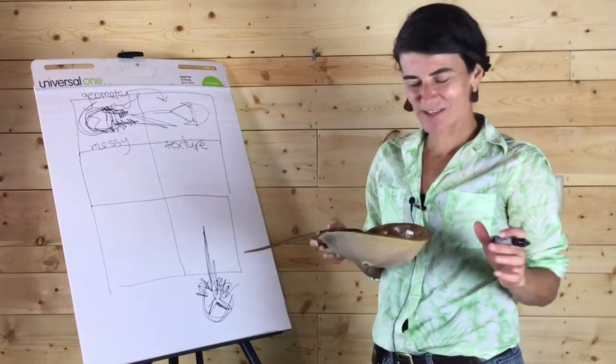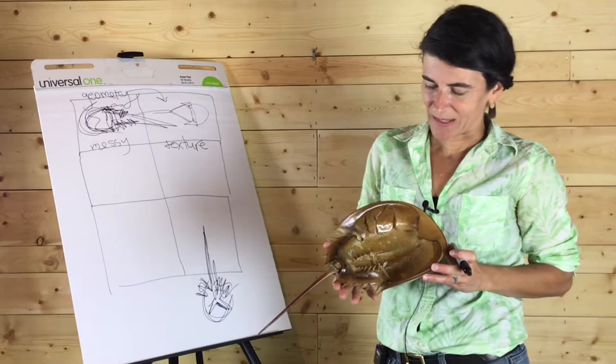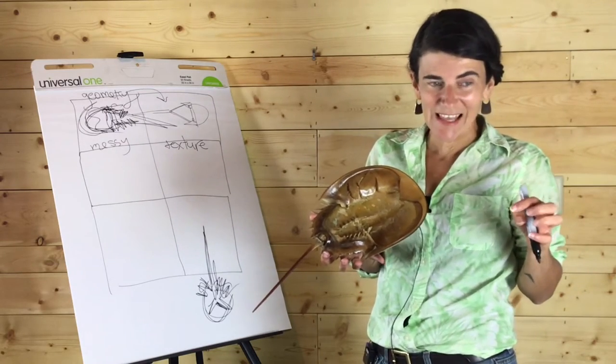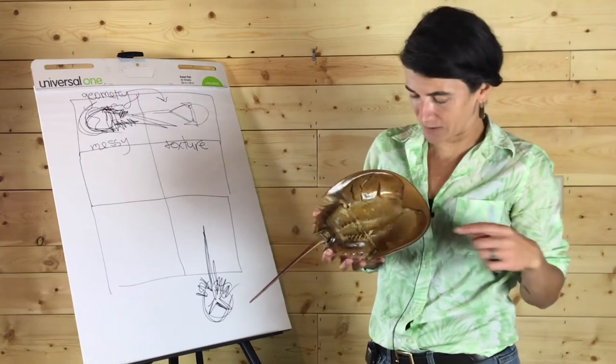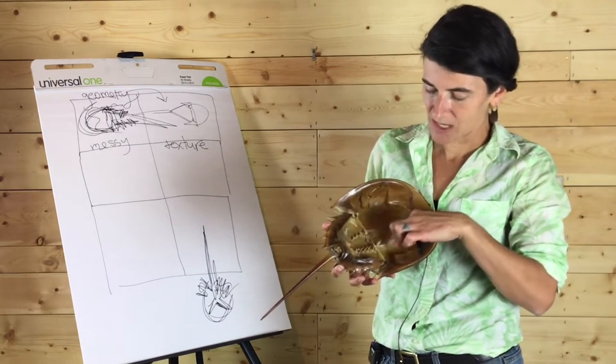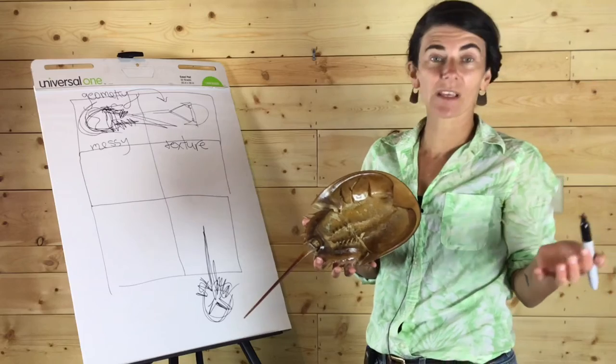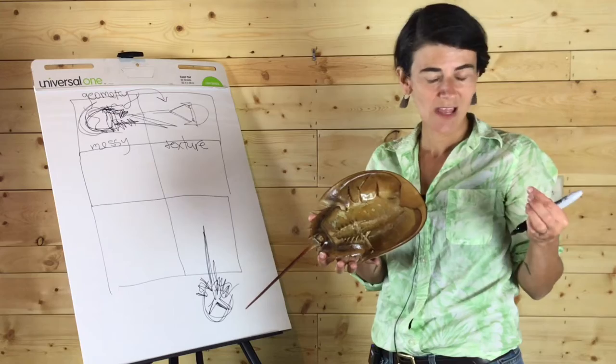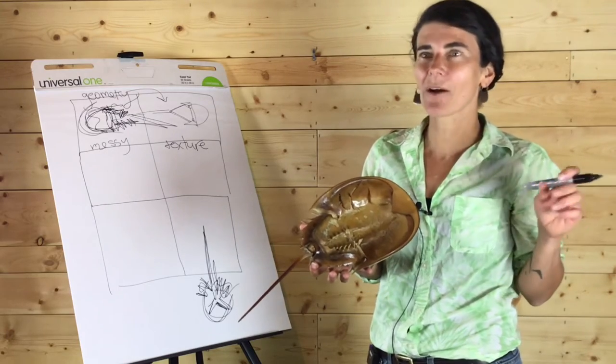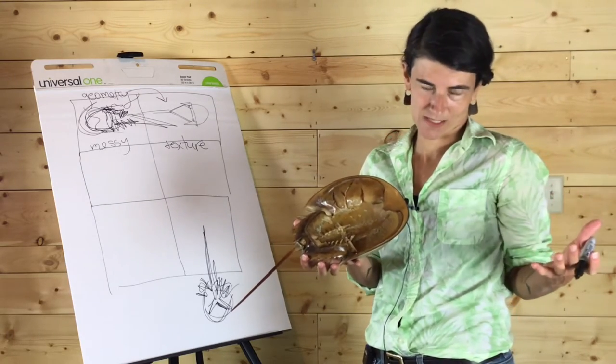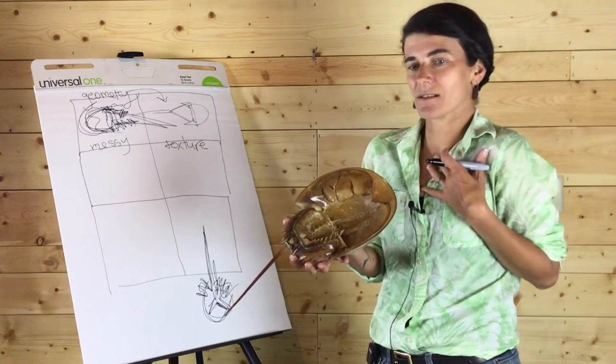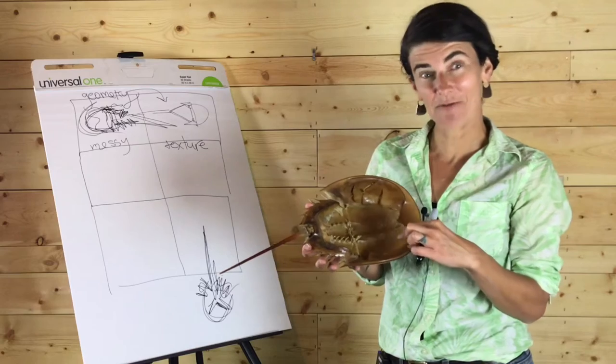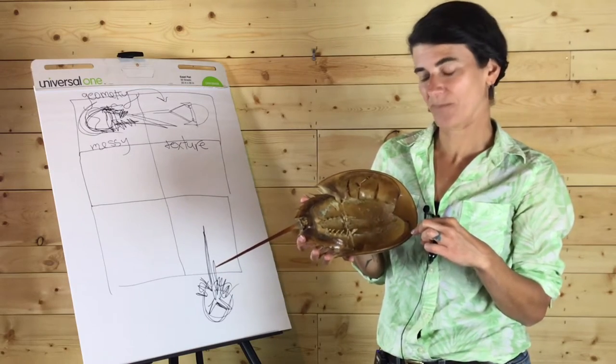When I'm thinking about texture, I'm thinking about kind of what would that thing feel like? And maybe I can touch it. Like right now I can, and I can feel that texture. But maybe it's something that I'm looking at out the window or in a photograph, or it's not really something I can handle. But I can think about how would that feel if I could touch it, how would it feel against my skin or also what kind of patterns and sort of visual textures does it have?